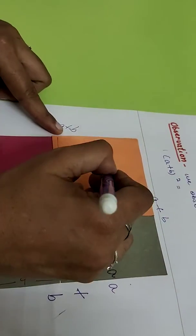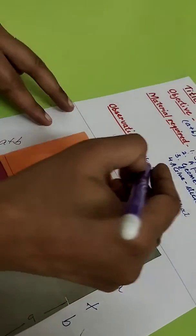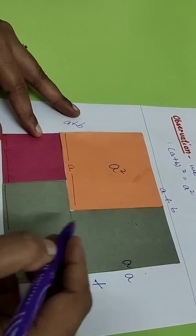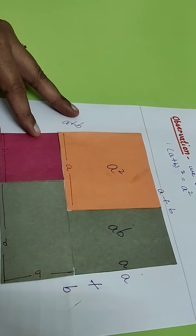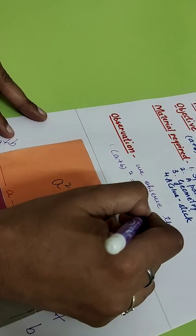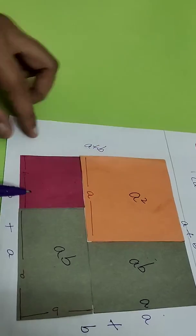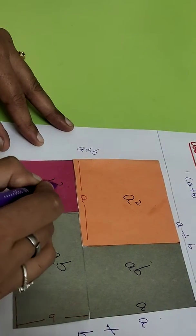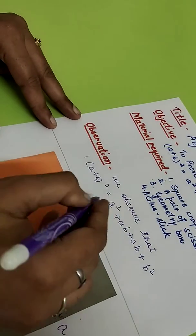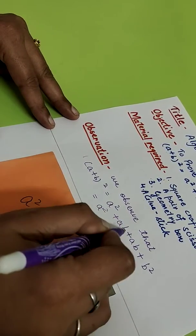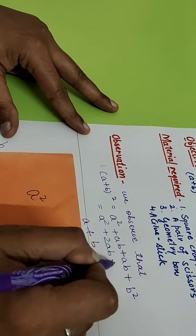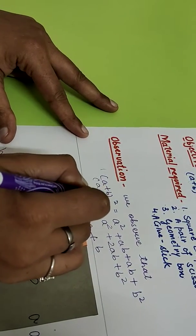The area of this orange piece is A square. Second, we have taken 2 rectangular pieces that is AB. The area is AB here and this is also having the area AB. So we can write AB plus AB and then this is the smaller square which is having the area as B square. So after solving we can just add these 2 ABs, so it become A square plus 2AB plus B square and it is same.